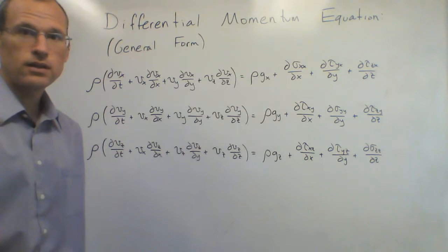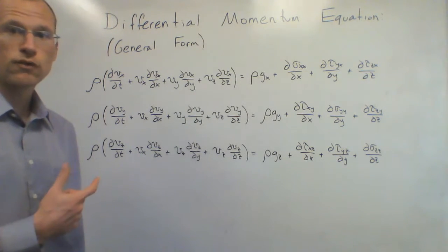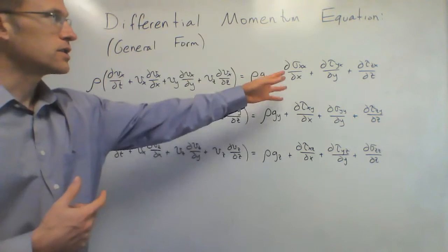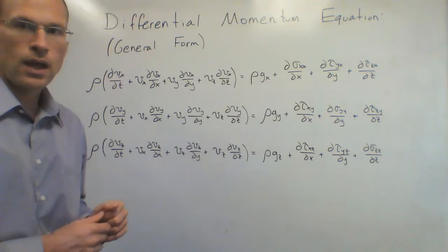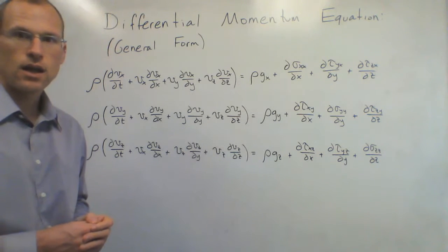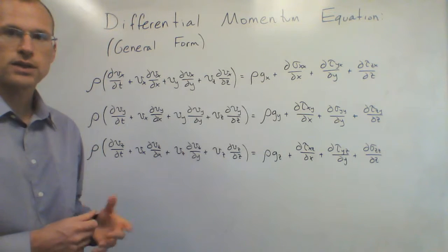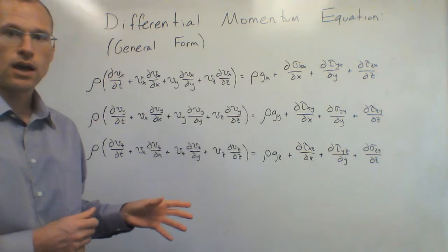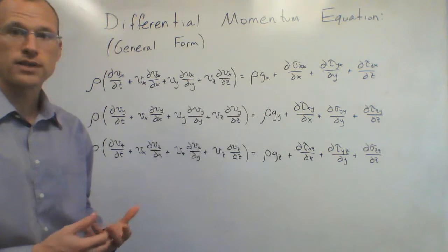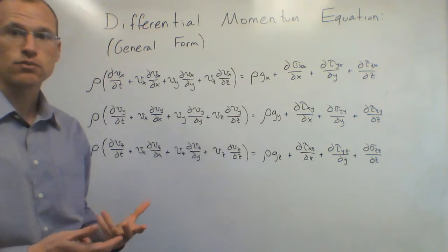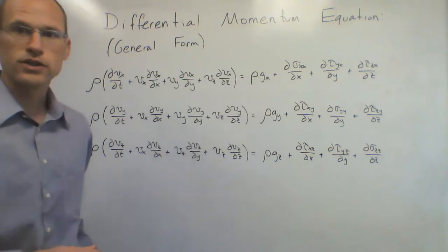In the last lesson we derived the differential momentum equation, the most general form, involving shear stresses and normal stresses, acceleration, and gravitational force. But as mentioned in that lesson, this is not always the best form to use. Today we're going to derive a slightly different form, changing some of these stresses into other quantities that are more easily measured, like velocities and pressures. And then from there, we'll actually solve these equations.